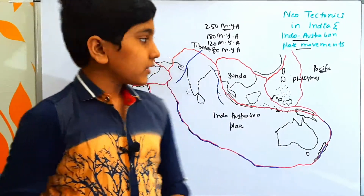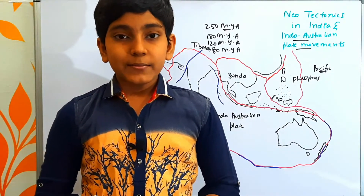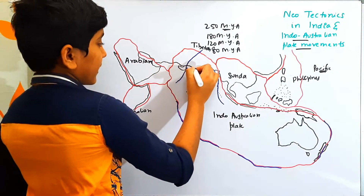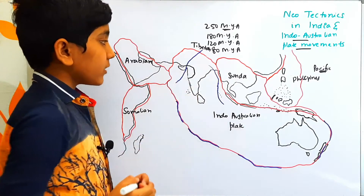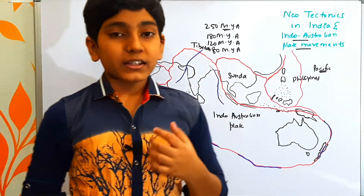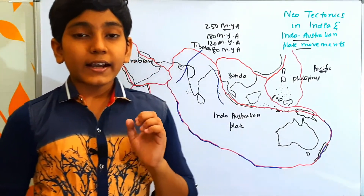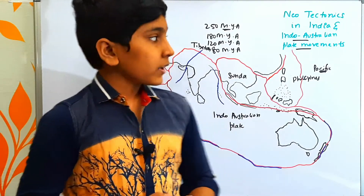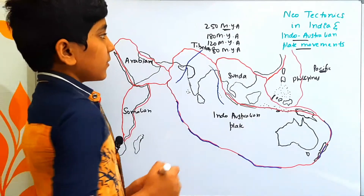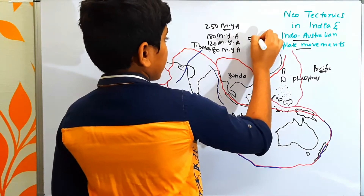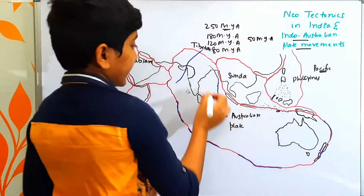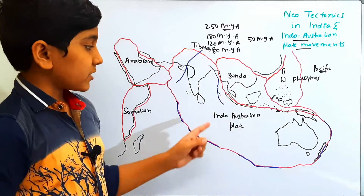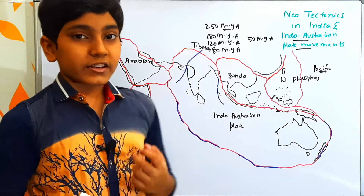Next, by the time of 60 to 70 million years ago, in the region of the Deccan Trap, volcanic lava had flowed over an area of approximately 7 lakh square kilometers. And next, by 50 million years ago, the Indian plate and the Australian plate had converged, leading to the formation of the Indo-Australian plate.